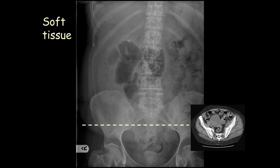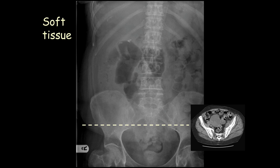Knowing that the lesion is there now, you can look at the plain film and notice there's no gas right down in that fossa — something is occupying that space. The CT scan shows the complex ovarian cyst with multiple septations, which are difficult to see on the plain abdominal film.